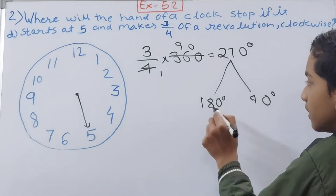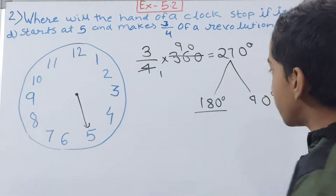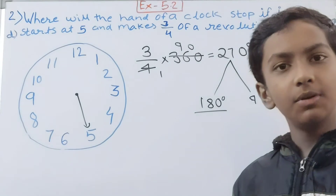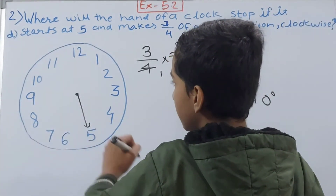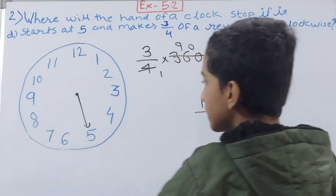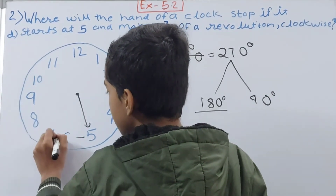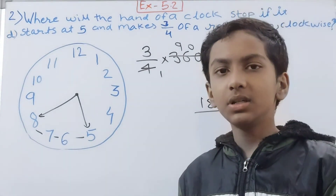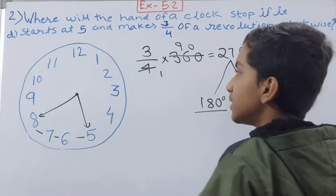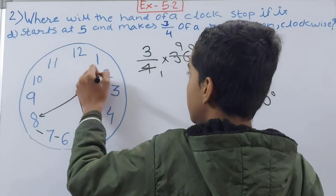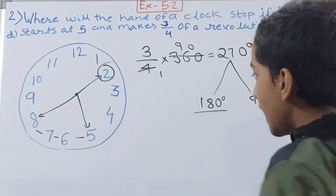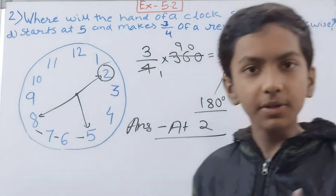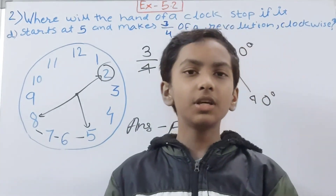Starting at 5, first apply the 90 degrees: move 3 hours ahead — 5 to 6 is 1, 6 to 7 is 2, 7 to 8 is 3 — landing at 8. Now apply the remaining 180 degrees: draw a straight line from 8, which lands at 2. So the answer is: the clock hand will stop at 2 if it starts at 5 and makes three-fourths of a revolution.